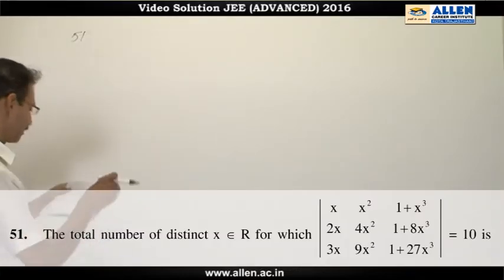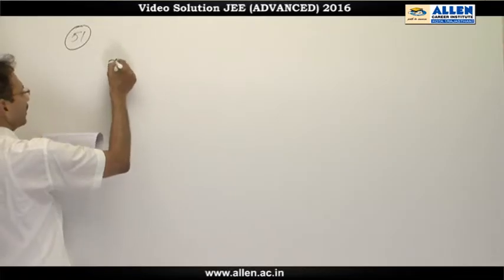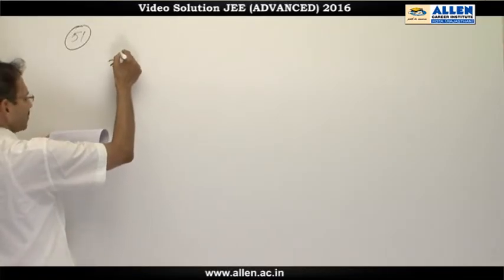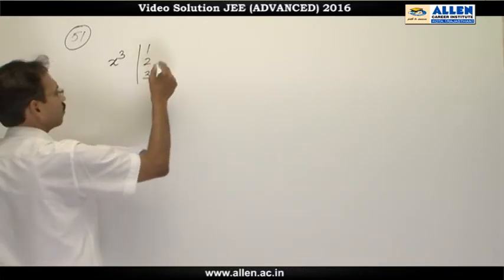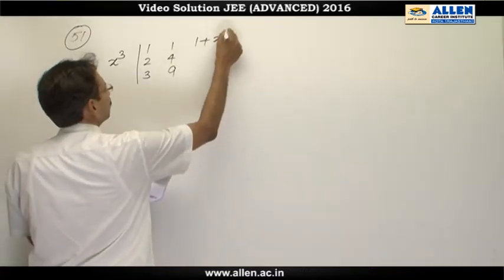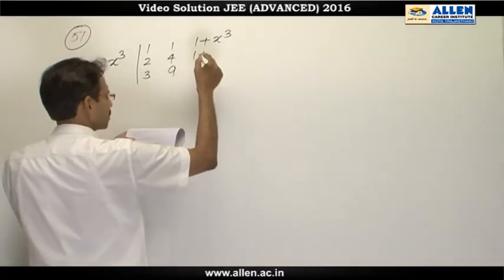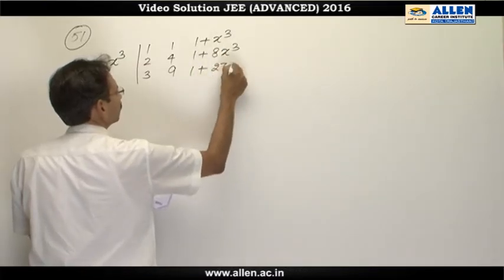Question number 51. We will take x and x square common from first and second column. This gives us x cube times the determinant: 1, 2, 3; 1, 4, 9; 1 plus x cube, 1 plus 8x cube, 1 plus 27x cube.